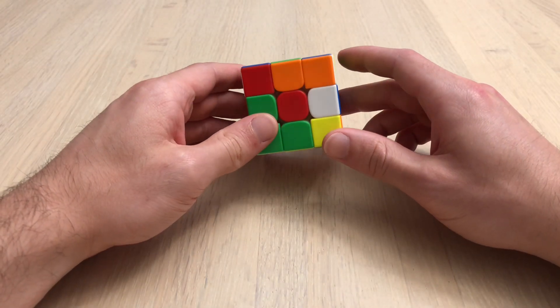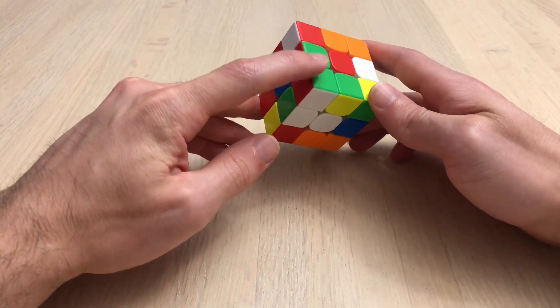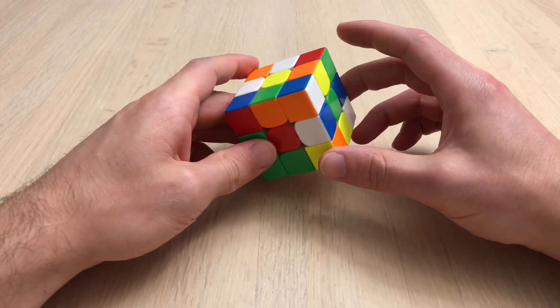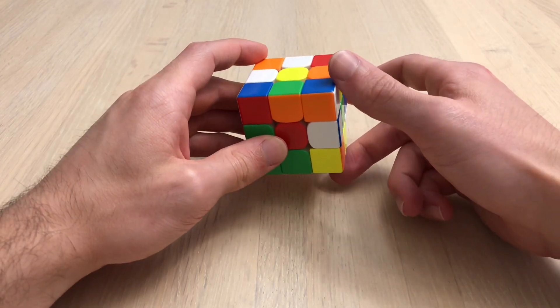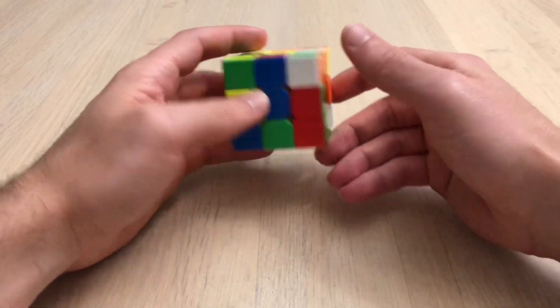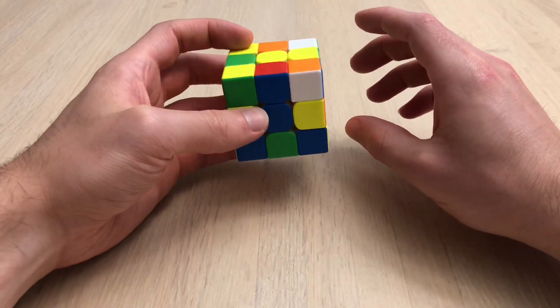Fifth scramble, another easy one. I notice this free pair which will be preserved automatically. So I'm going to move this down, rotate, finish cross, D2.